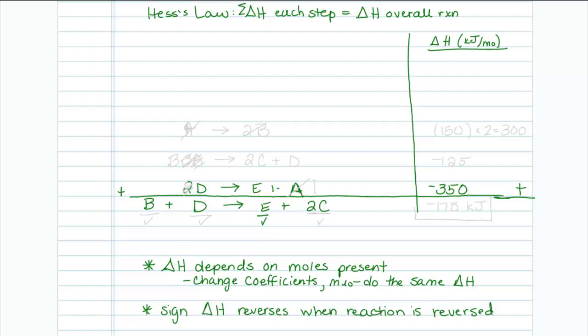Let's look at C. Only process 2 has C in it. It has two moles of it, just like I want, and it's on the product side, just like I want. So I'm going to write that reaction for process 2 exactly as I see it. If I don't change it, I don't change the delta H. So now I've accounted for my 2C. I know if I would add these up, I'd get 2C and E.